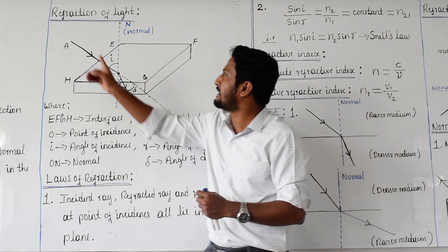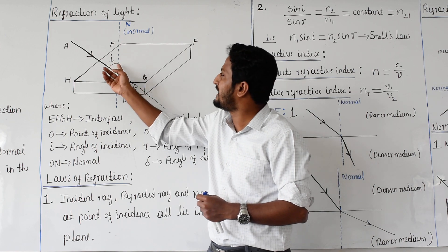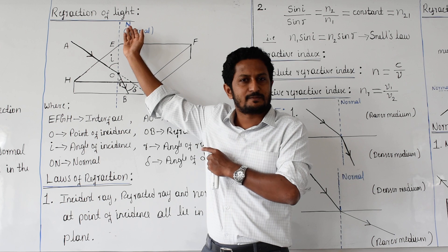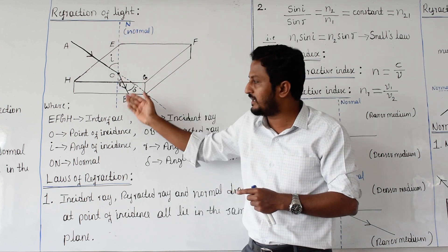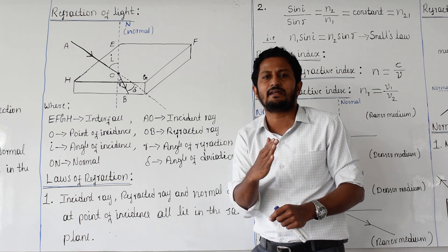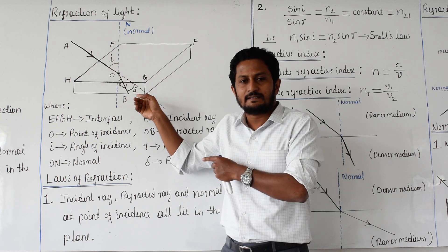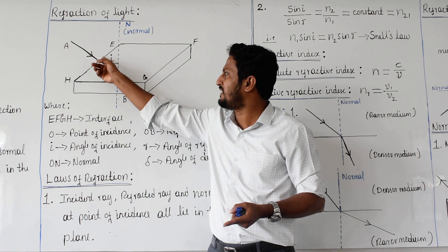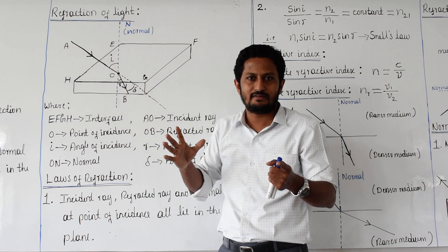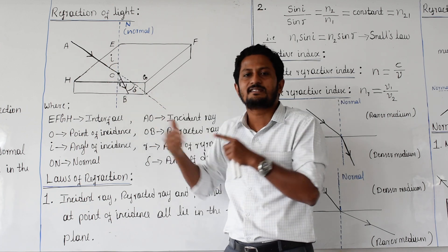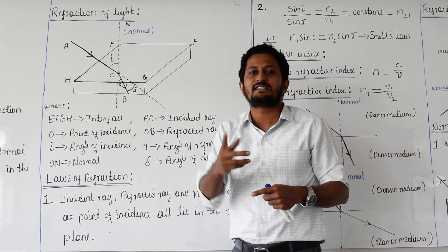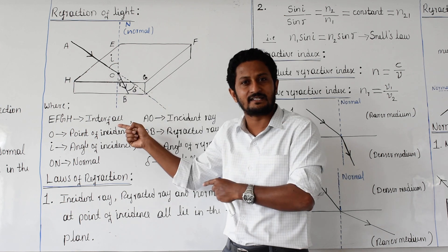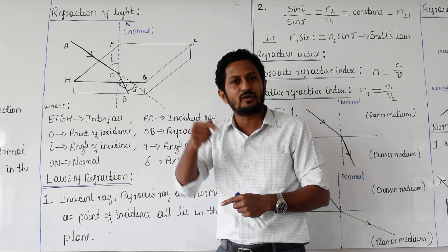For example, suppose the incident light AO makes an angle of 45 degrees with the normal and the angle of refraction is 30 degrees. Then sine 45 divided by sine 30 gives some value X. If you change the angle of incidence to 50 degrees, you might get a refraction angle of 35 degrees, and sine 50 divided by sine 35 gives the same value X.